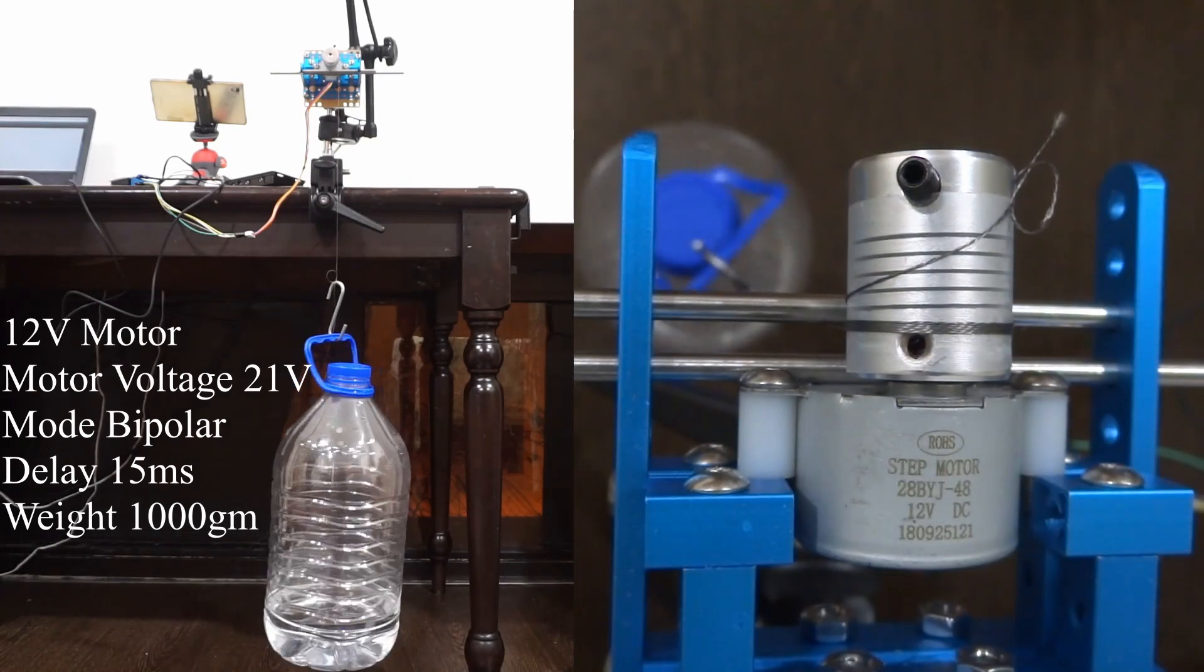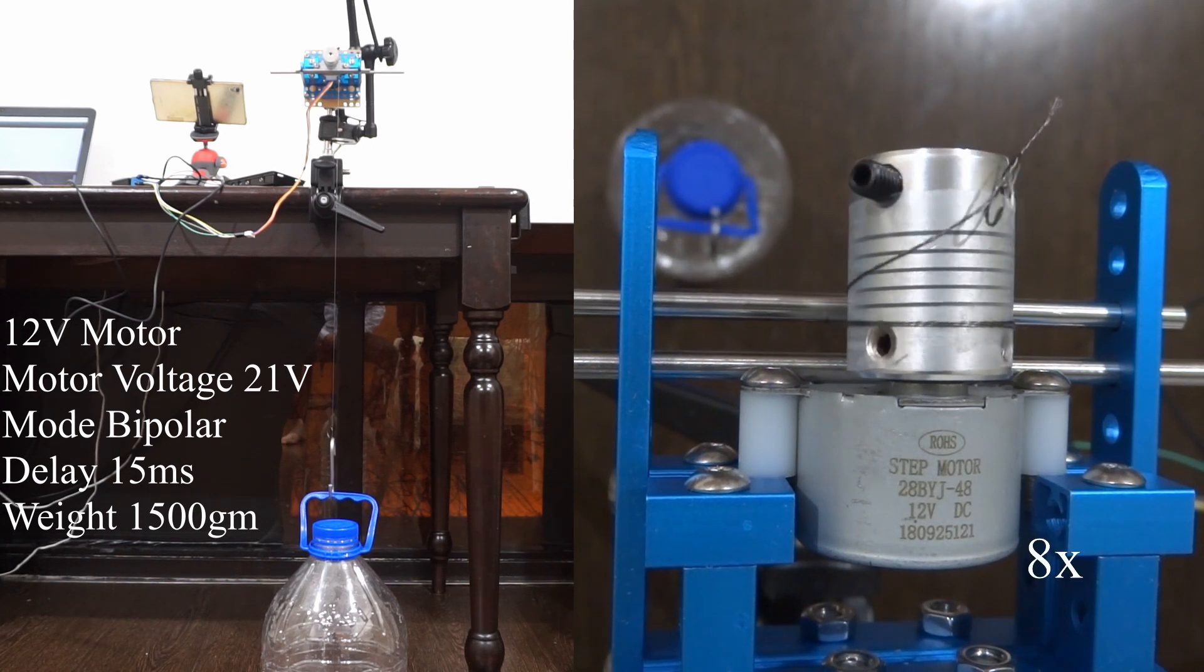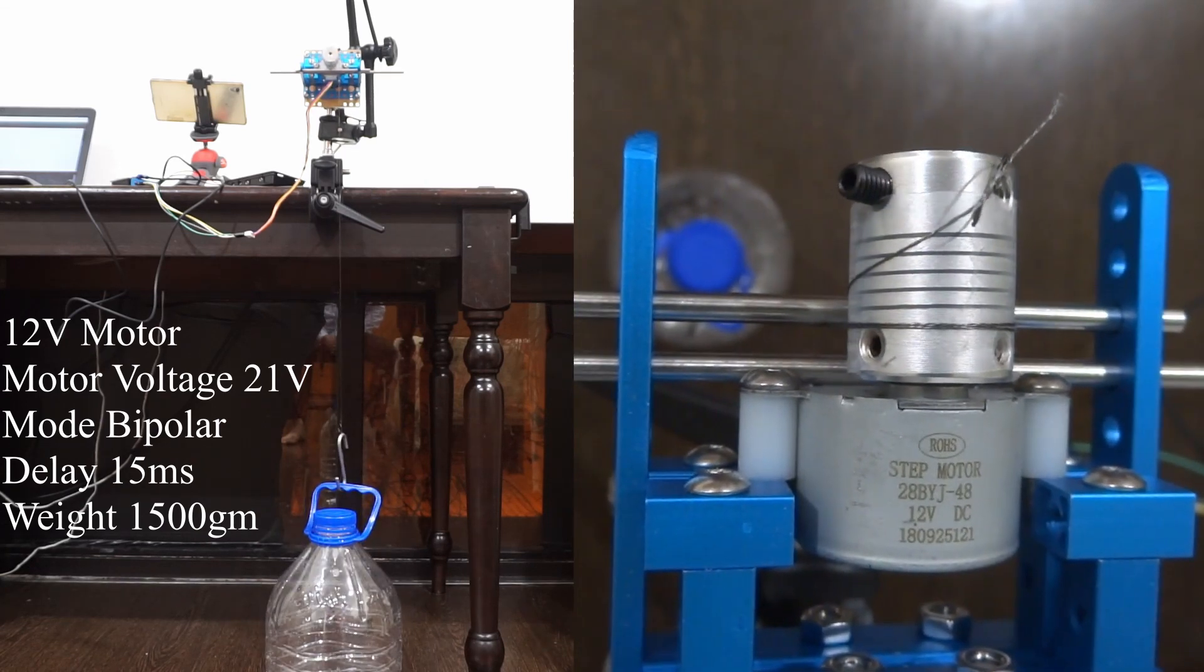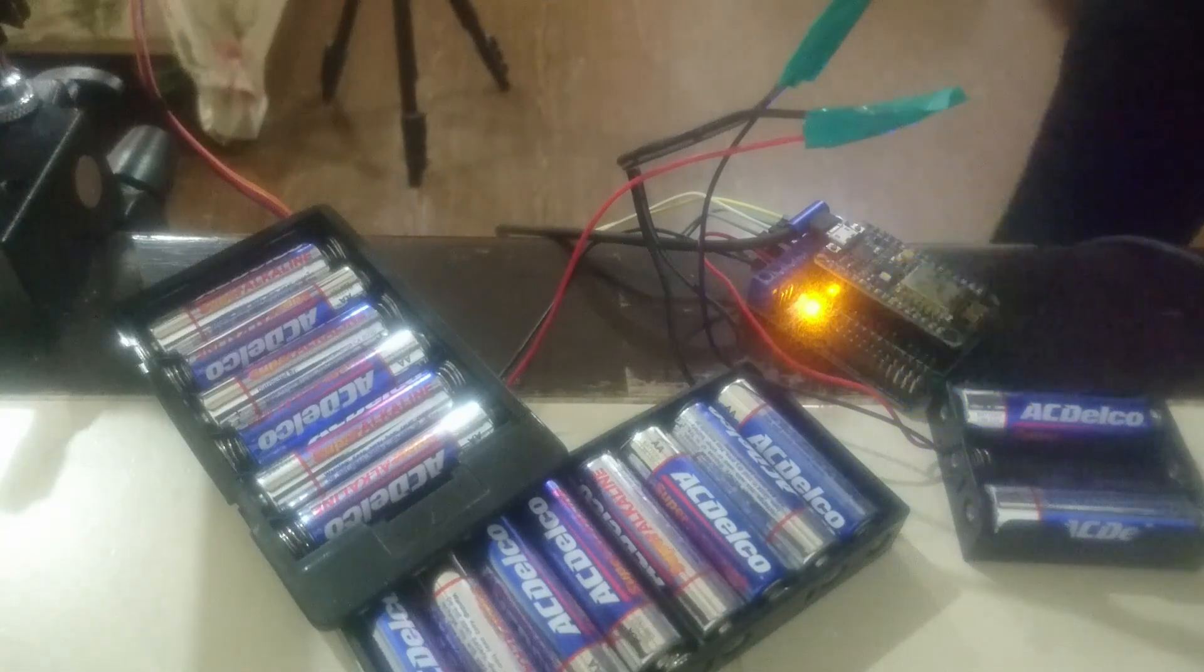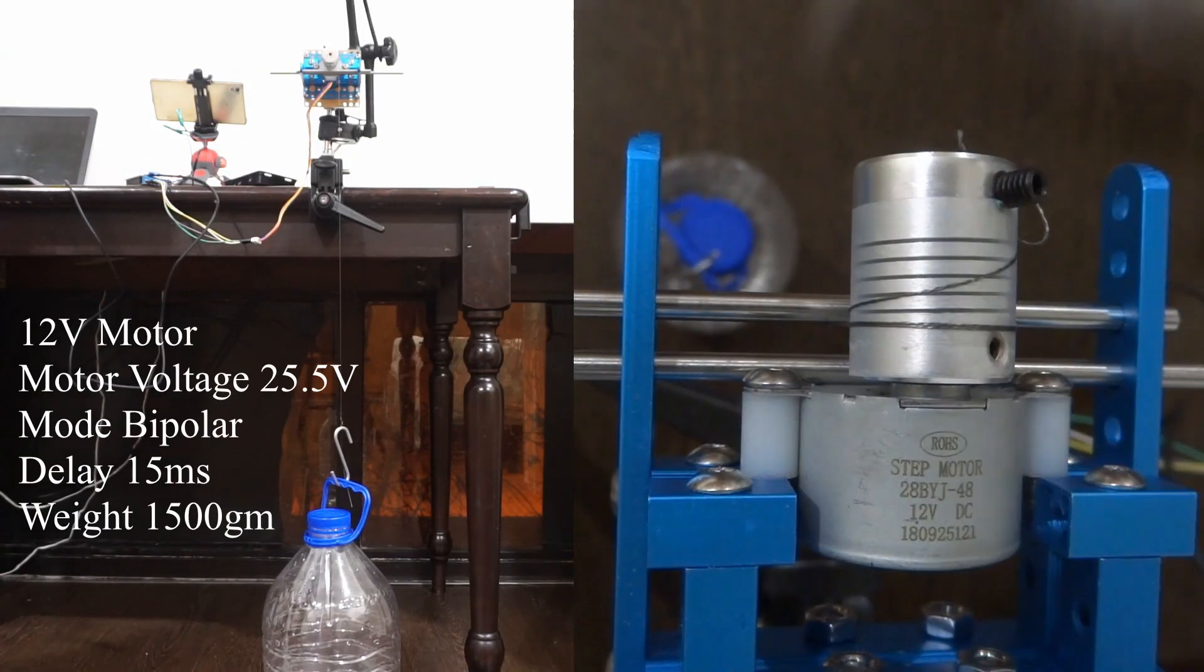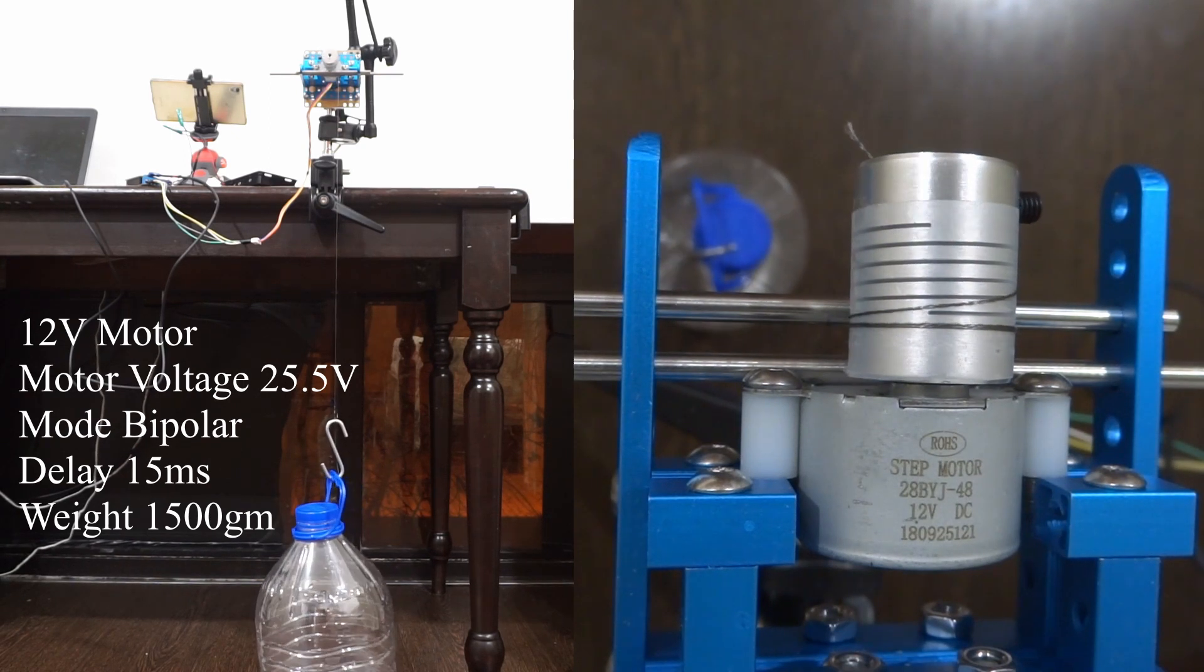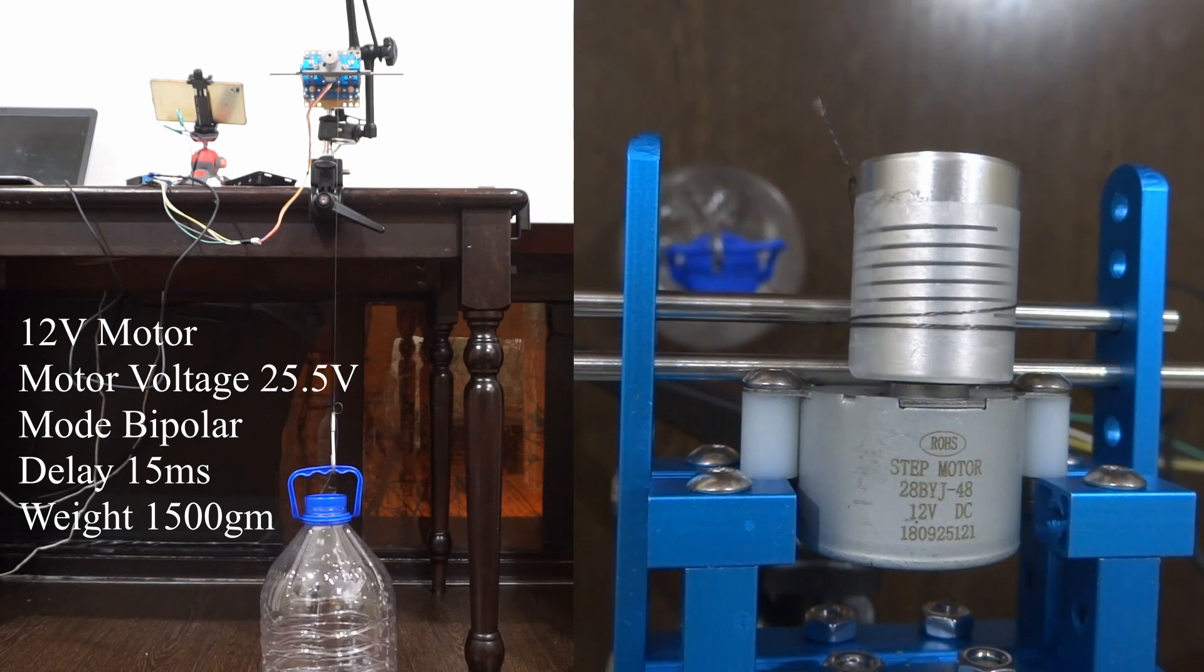The motor is able to lift it. The weight of the bottle is now 1.5kg. The motor is not able to lift that. The voltage is now 25.5V with 17 1.5V batteries. Actually I made a calculation mistake. I wanted 24V and not 25.5V as 24 is double 12V. The weight of the bottle is still 1.5kg.